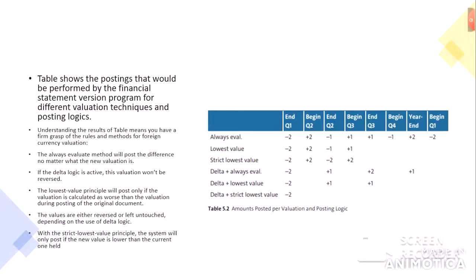With the strict lowest value principle, the system will only post if the new value is lower than the current one held. The lowest value principle will post based on its own comparison logic. At end of quarter one the difference is minus two, and at the beginning of the next quarter it reverses to plus two — and the amounts posted per valuation follow this posting logic.